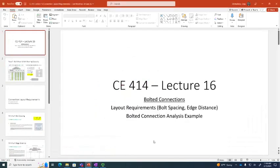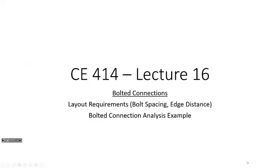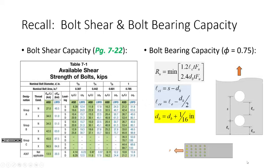Let's go into layout requirements. I want to give a quick recap on bolt shear and bolt bearing capacity that we talked about last time. This slide has a lot of information packed into it, but basically in a nutshell this summarizes everything that we talked about on Monday. For a bearing type connection, we have two strength limit states that we need to adhere to: the first is bolt shear capacity, and the second is bolt bearing capacity.